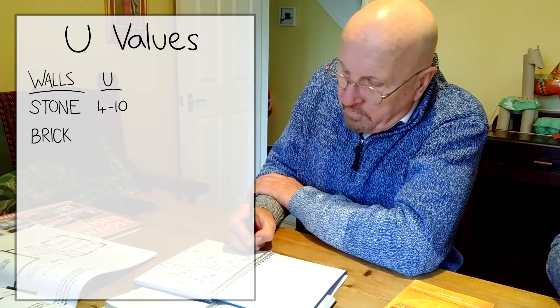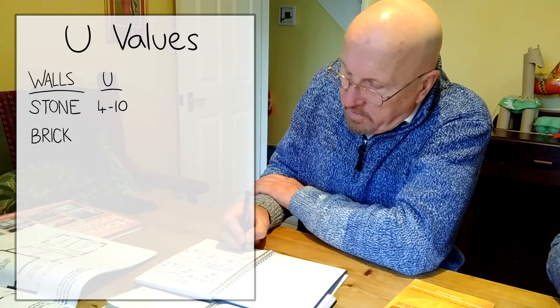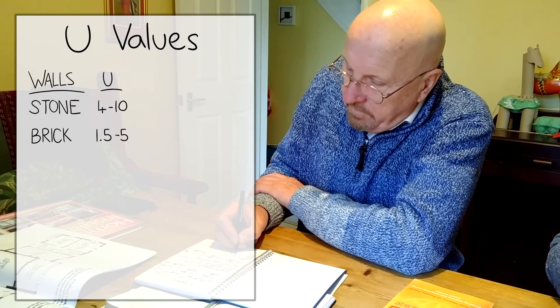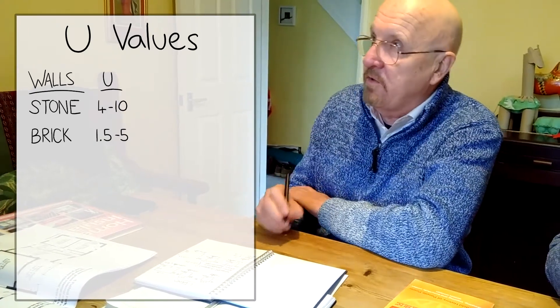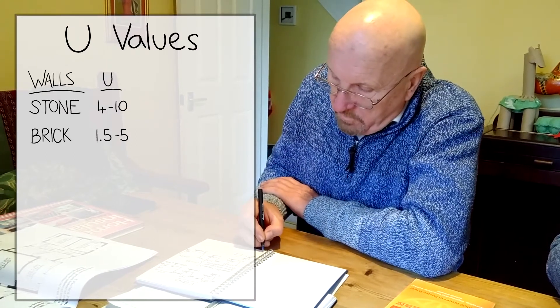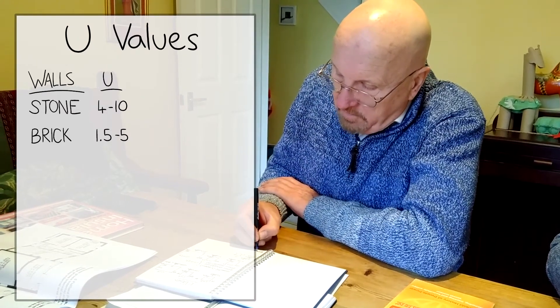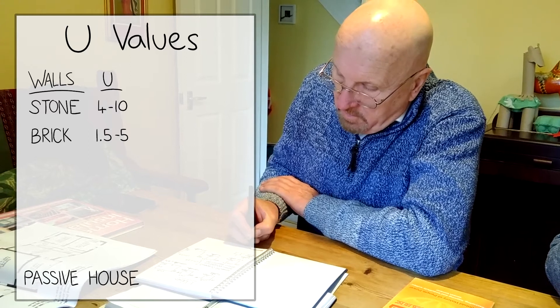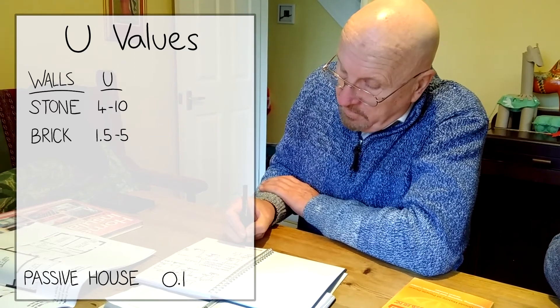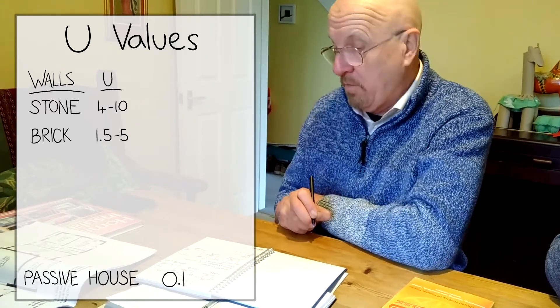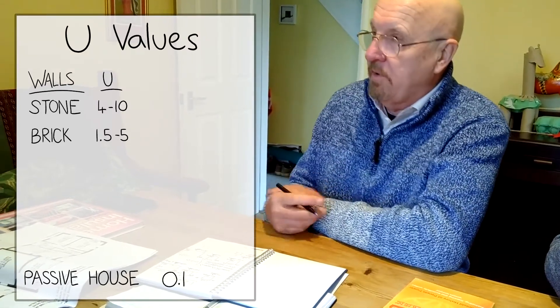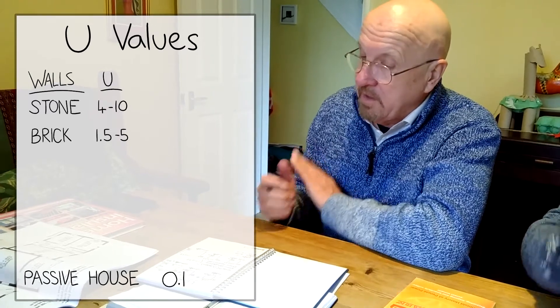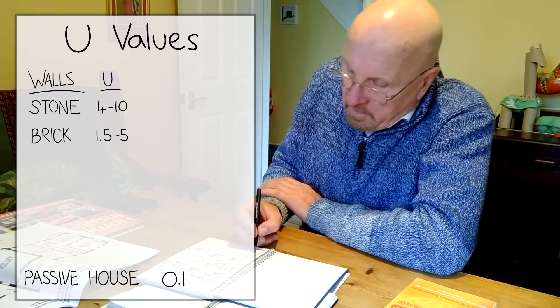A brick house or brick and block, we're looking at somewhere between 1.5 to 5, some kind of range like that. Big range because there's so many different materials. What's the gold standard here? Passive house, 0.1. If you can get down to there, then the house will probably be pretty much self-sustaining in terms of heat demand, just without any additional heating.